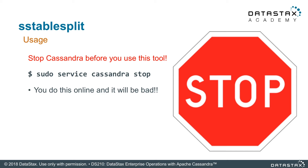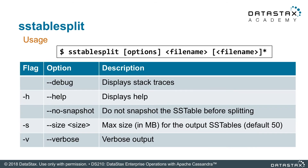The usage is pretty simple. If you look at this table, there are just a few options, but they're really important. SSTableSplit is run on an SSTable — one of the data files sitting on your disk — so you have to provide that file name. The other thing that's really important is the size: how big do you want it to be? The other options are more or less like verbose output, that sort of thing.